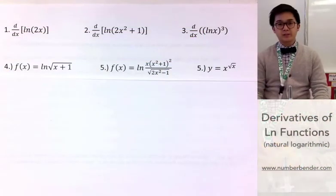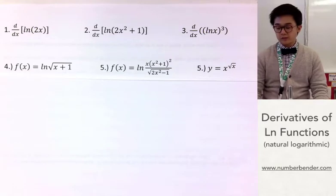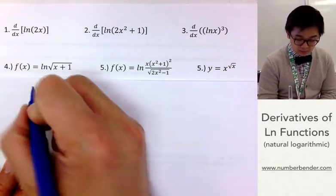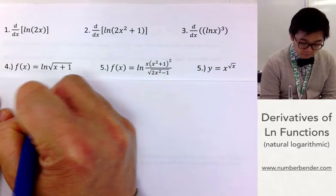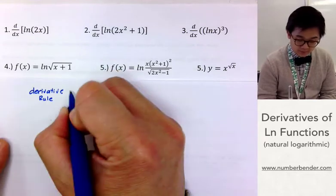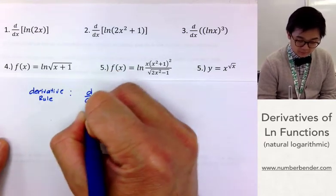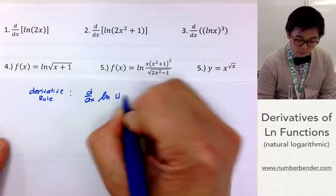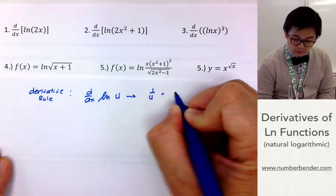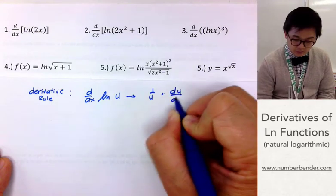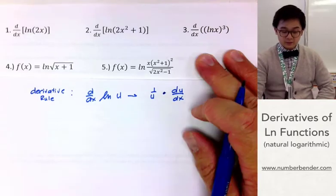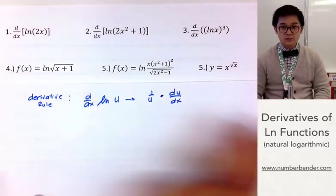Today we're going to find the derivative of functions in terms of ln. We know that in our formula, the derivative rule for finding the derivative of ln u, where u is any function, is simply 1 over u times du all over dx. This is what we're going to be using in finding the derivative of these functions.